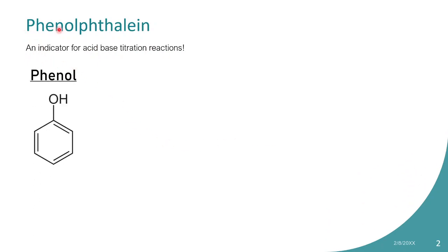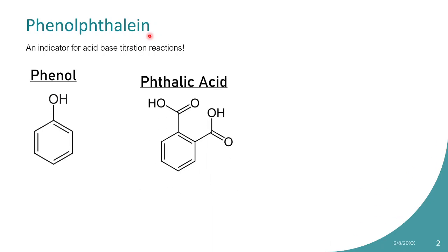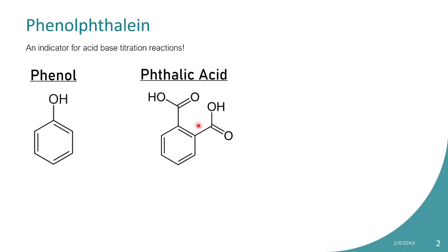From the name, you can understand that there is a phenol molecule somewhere in this molecule. 'Thalein' indicates towards phthalic acid. Phthalic acid is a simple dicarboxylic acid with a benzene ring and two carboxylic acid groups.